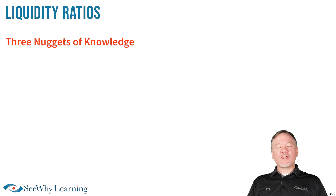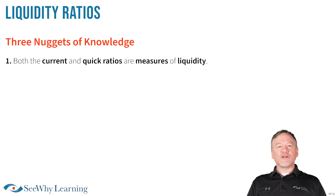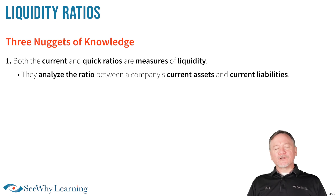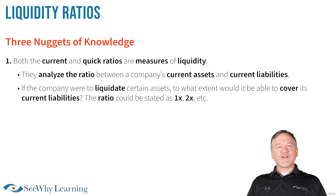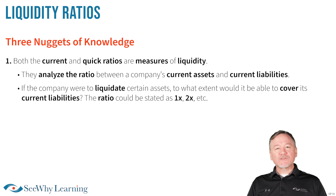There are three nuggets of knowledge that will help you determine the correct answer and earn yourself a mark. Nugget number one: both the current and quick ratios are measures of liquidity. They analyze the ratio between a company's current assets and current liabilities — in other words, if the company were to liquidate certain assets, to what extent would it be able to cover its current liabilities? The ratio could be stated as 1x, 2x, or whatever.